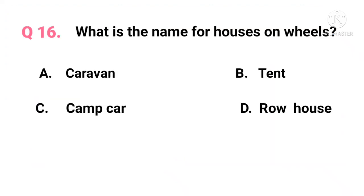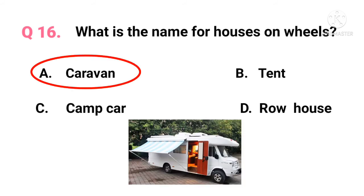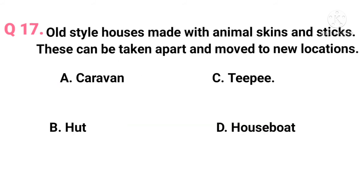Question 16. What is the name for houses on wheels? The answer is option A — caravan.